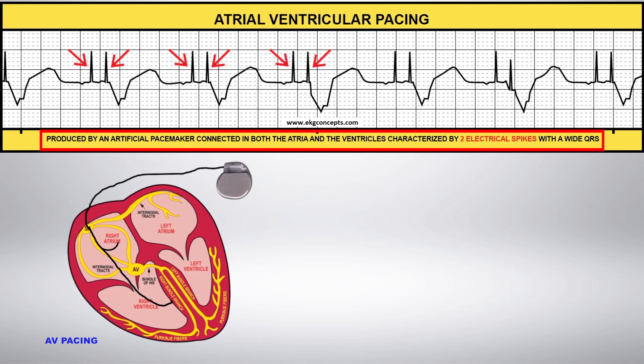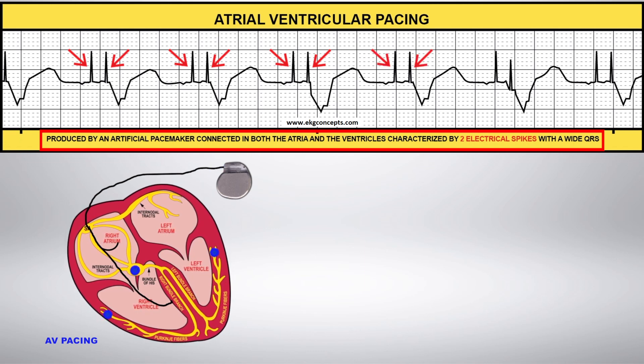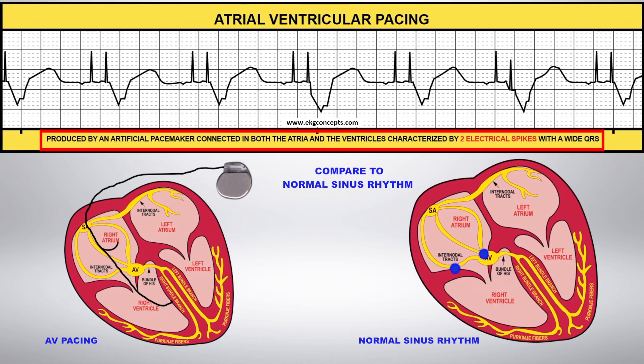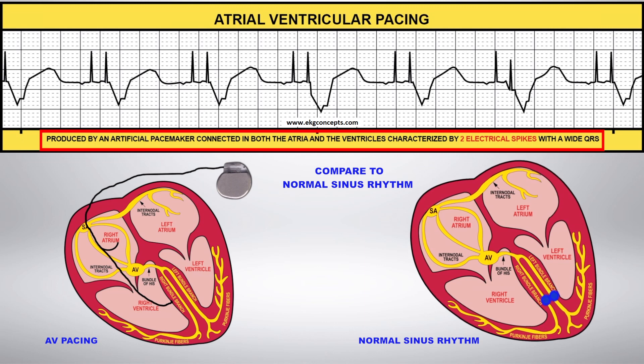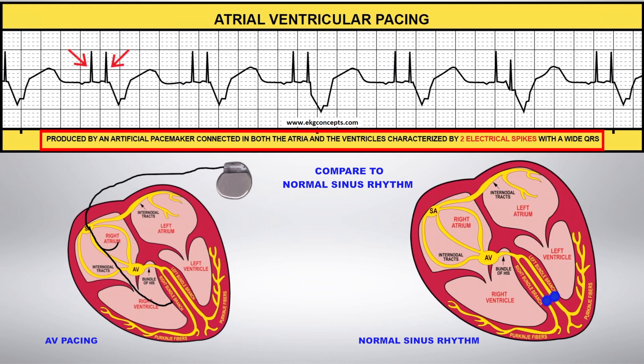The characteristics of AV pacing are two electric spikes followed by a wide QRS. Compare this rhythm to normal sinus rhythm.